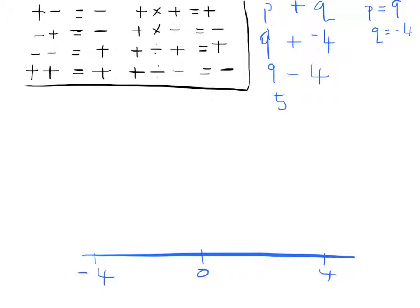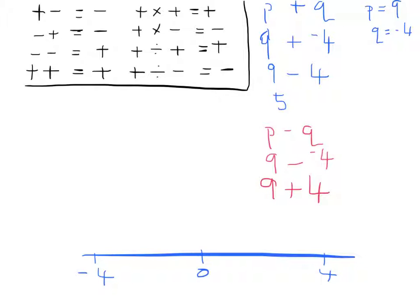Let's have a go at another one to make sure we're really comfortable. P minus Q, using the same values: P is equal to 9 and Q is equal to minus 4. Let's substitute them in — P is 9, take away negative 4. I've put the little negative sign up there so you don't get confused. We've got take away and a negative — a minus and a minus. Going to our reminder box: a negative and a negative becomes a plus. So 9 plus 4 — 9 plus 4 we know is 13.